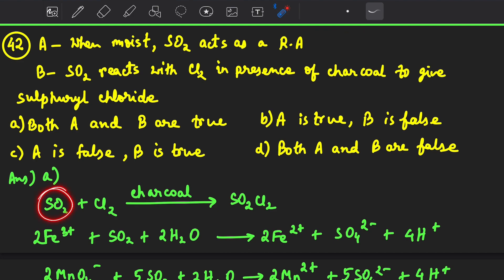SO2 when reacts with chlorine gives sulfuril chloride. This is the formula of sulfuril chloride SO2Cl2. And when moist SO2 acts as reducing agent, see the reactions of this.